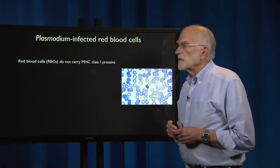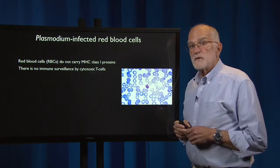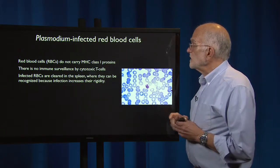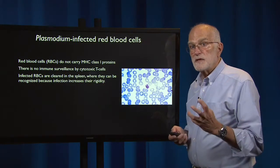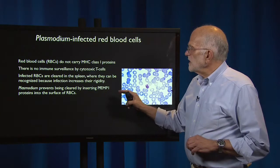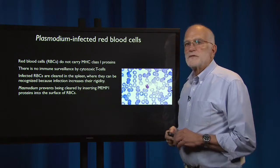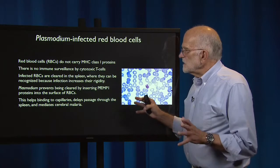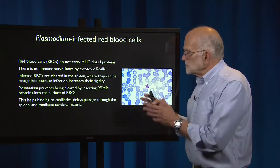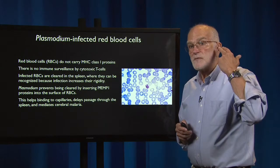These red blood cells do not carry MHC class I proteins and also lack nuclei, so there is no immune surveillance by cytotoxic T cells. However, infected red blood cells are cleared in the spleen, where they can be recognized because infection increases their rigidity — the membrane properties of the red blood cell are altered. Plasmodium prevents being cleared by inserting a protein called PFEMP1 into the surface of the red blood cells. This helps binding to capillaries and delays passage through the spleen, but it also mediates cerebral malaria — the reaction to getting cleared by the spleen causes changes that may make infected cells more likely to stick to capillaries in the brain.